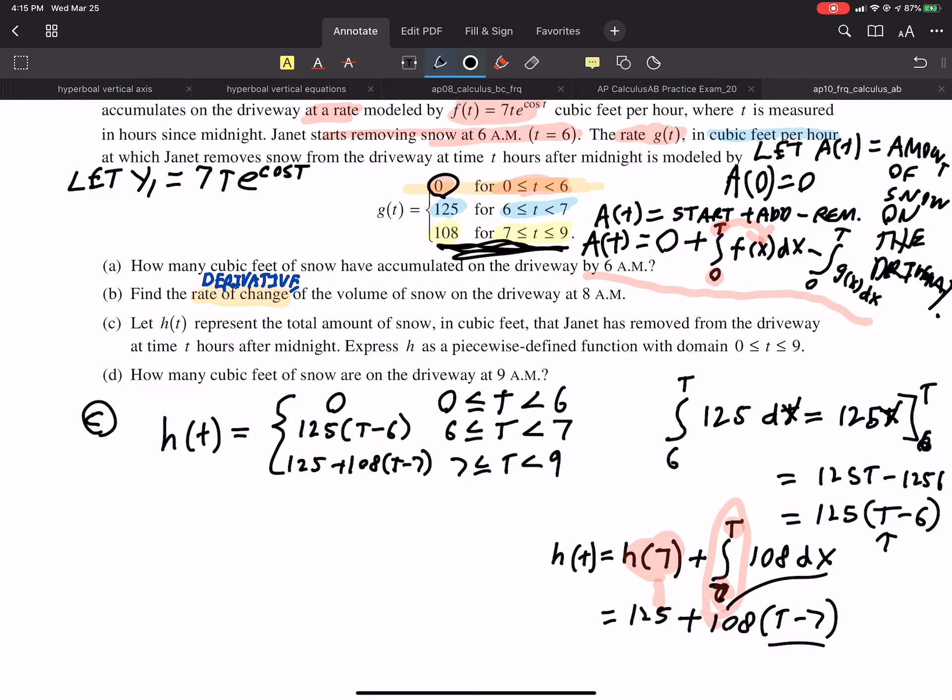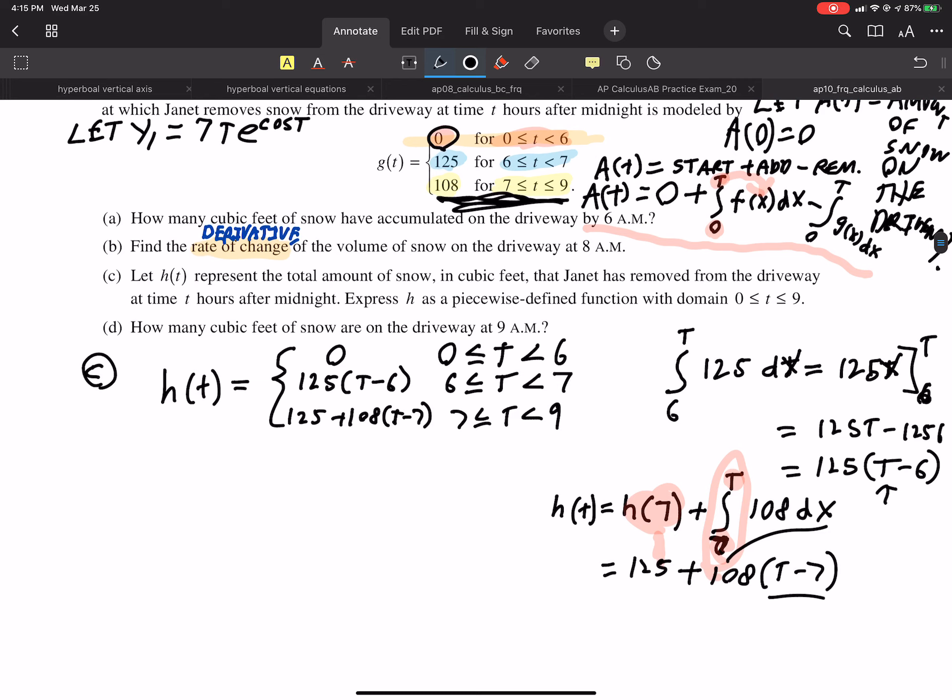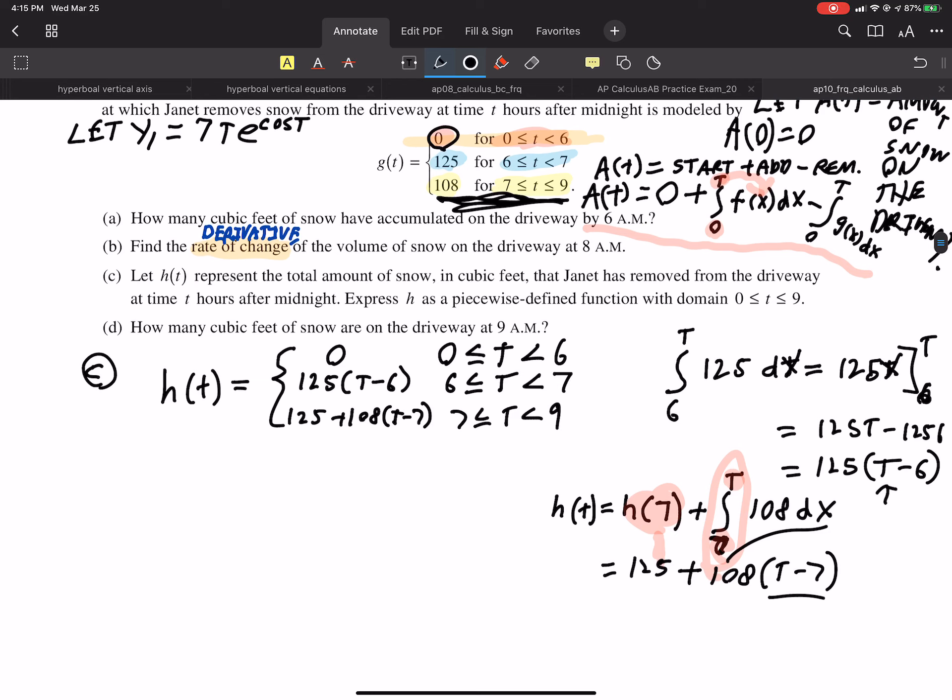All right. Let's do par D. Par D is going to be pretty easy. Because, I will show you why. Par D. We want to find out the amount of snow at what time? 9. So, we need to find out how much snow has fallen, because our start amount is 0. We're going to use that formula. This formula here. Okay. So, integral from 0 to 9 of the rate at which snow has fallen. Minus. Now, we can integrate G of T, but we have this formula here now for how much snow she's removed. So, that's going to be H of 9.